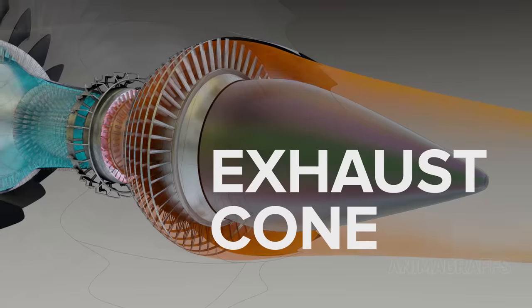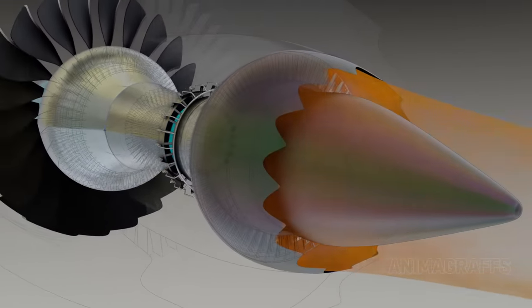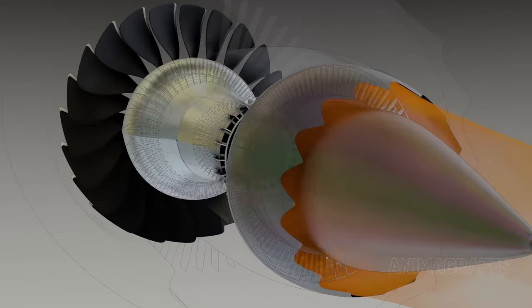The exhaust cone is specially shaped to mix and accelerate exhaust streams. It also covers sensitive internal engine parts.